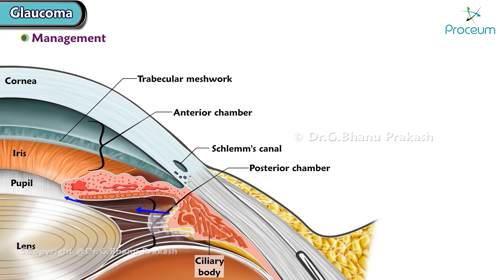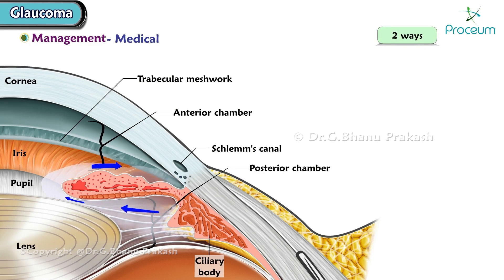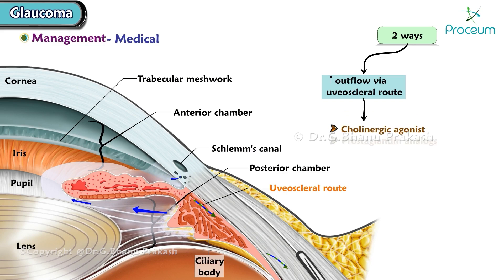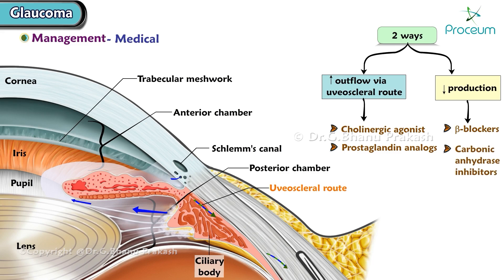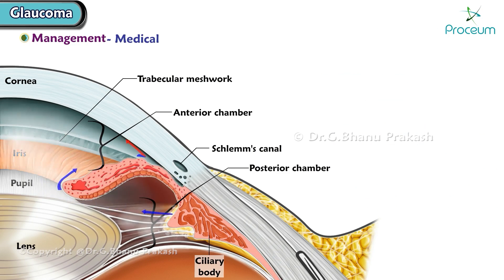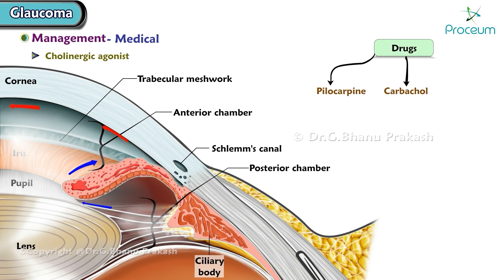Management of primary glaucoma — medical management. There are two ways of managing glaucoma medically: first, by increasing outflow via the uveoscleral route using cholinergic agonists and prostaglandin analogs; second, by decreasing production using beta blockers and carbonic anhydrase inhibitors. Adrenergic agonists work by a dual mechanism — they decrease production as well as increase uveoscleral outflow. Cholinergic agonist drugs include pilocarpine, carbachol, and echothiophate.